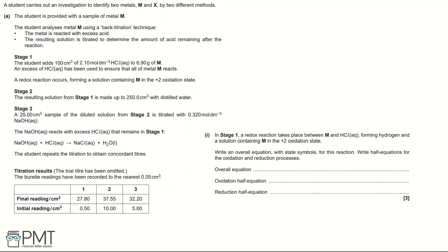In Stage 1, the student adds 100 cm³ of 2.10 mol dm⁻³ hydrochloric acid to 6.90 grams of metal M. An excess of hydrochloric acid is used to ensure that all of metal M reacts. A redox reaction occurs, forming a solution containing M in the 2+ oxidation state.